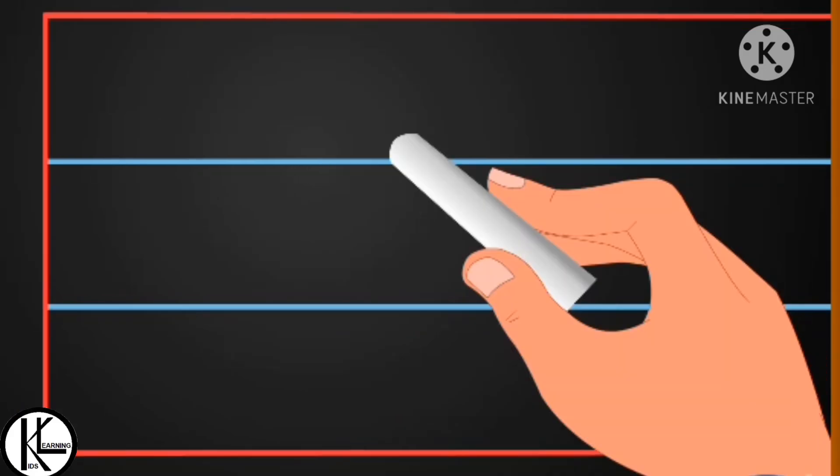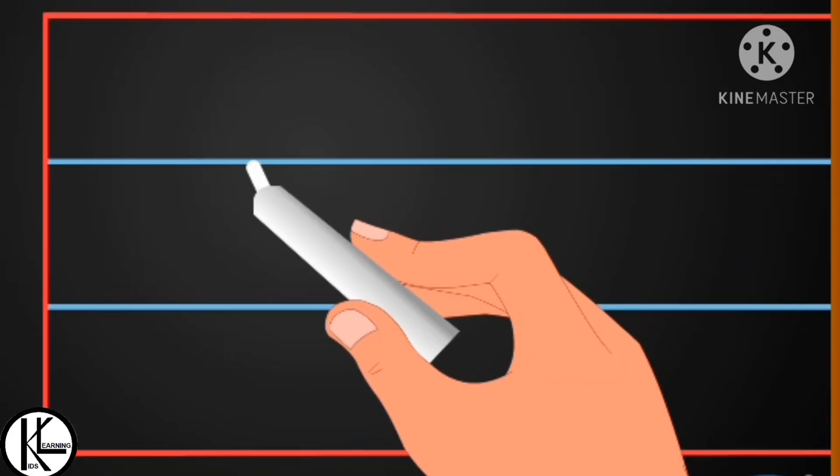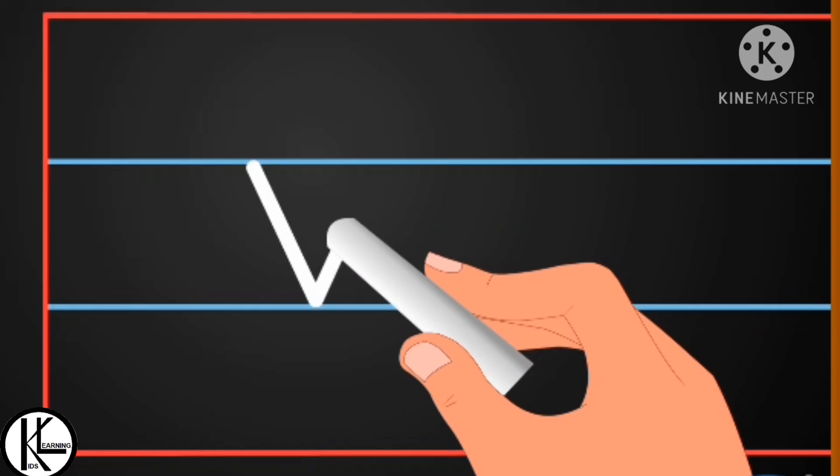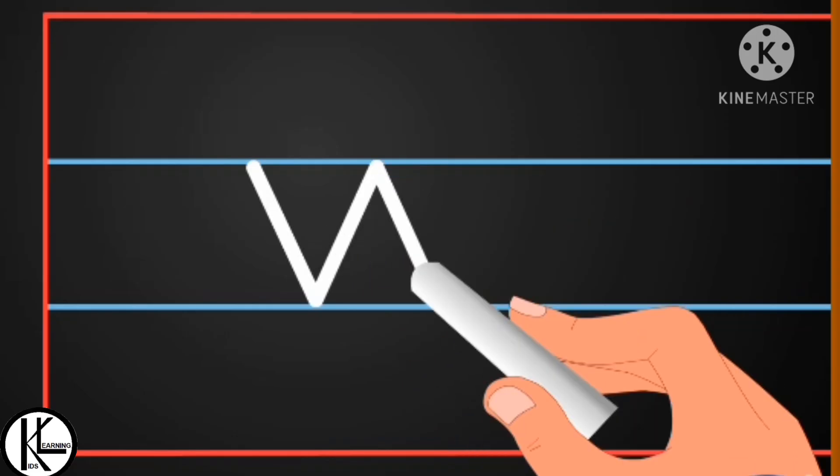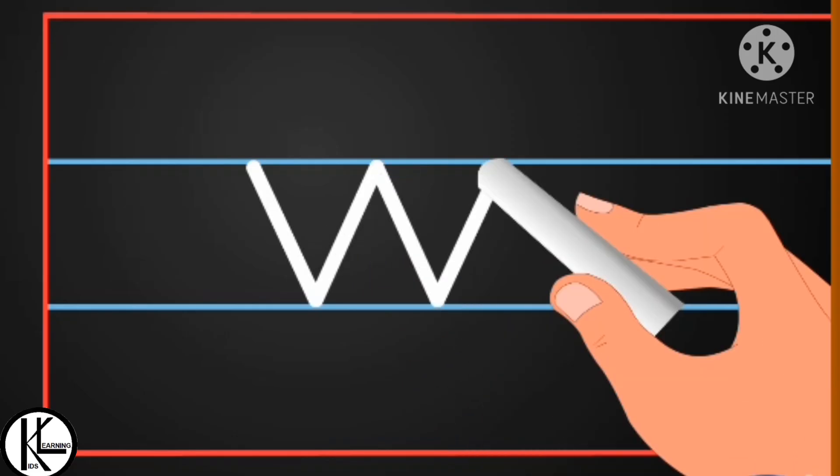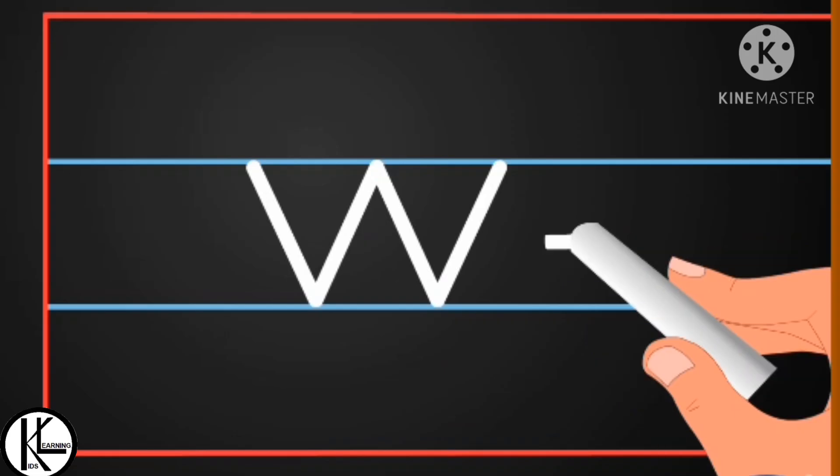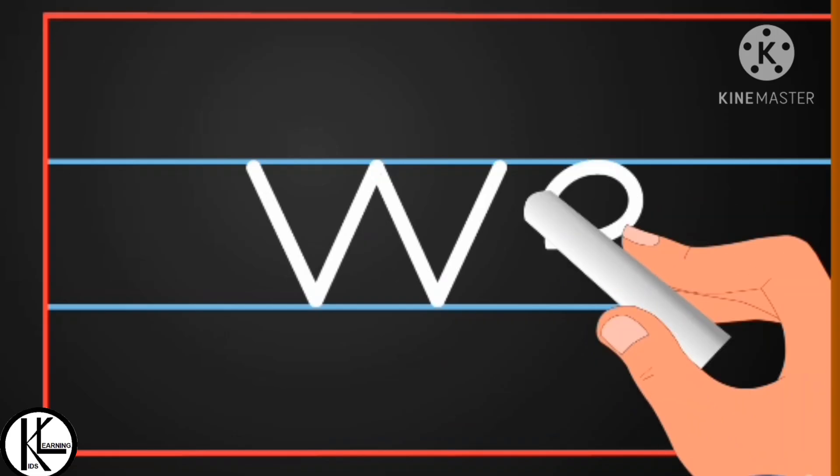Now we'll write letter W: W, E, We. We are writing letter W, and now we'll write letter E. W, E, We.